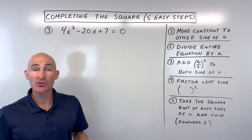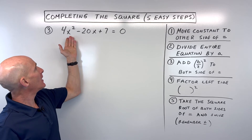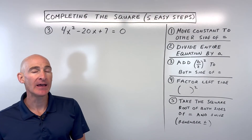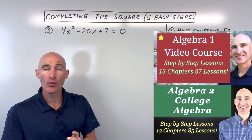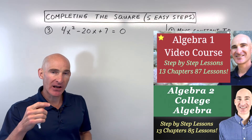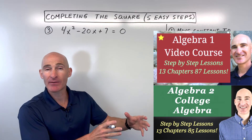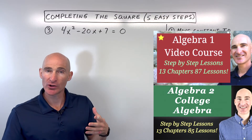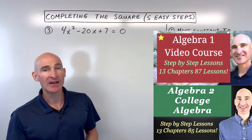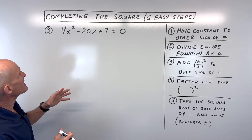Let's take a look at one more example. If you're getting the hang of this completing the square method, go ahead and try this one on your own: 4x squared minus 20x plus 7 equals 0. If you like the way I explain things and want to learn more about Algebra 1 or Algebra 2 and college algebra, check out the link in the description — I've got courses there with step-by-step examples and practice problems. But let's finish this last problem.